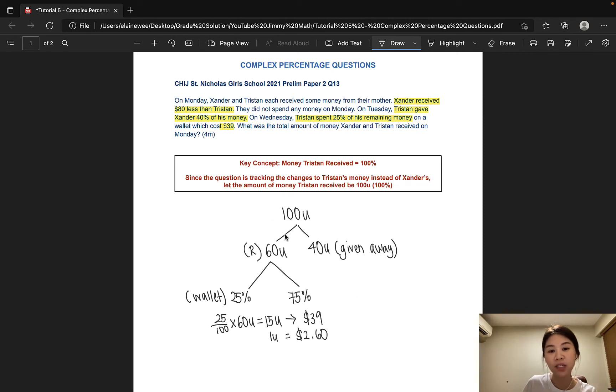Since Tristan received 100 units, we can go ahead and find out how much 100 units is. $2.60 multiplied by 100 would give us $260. So this is the amount that Tristan received.